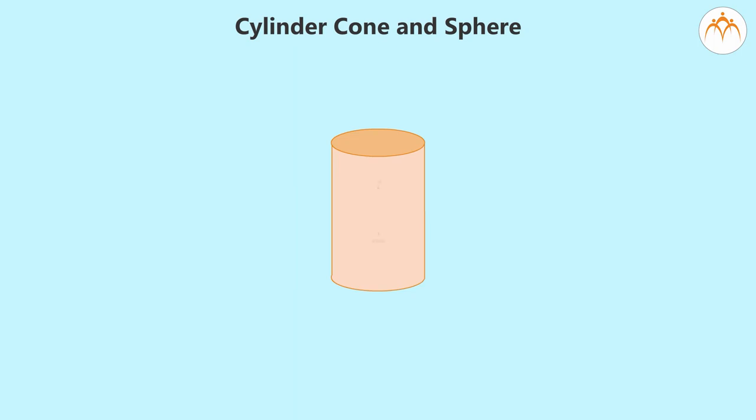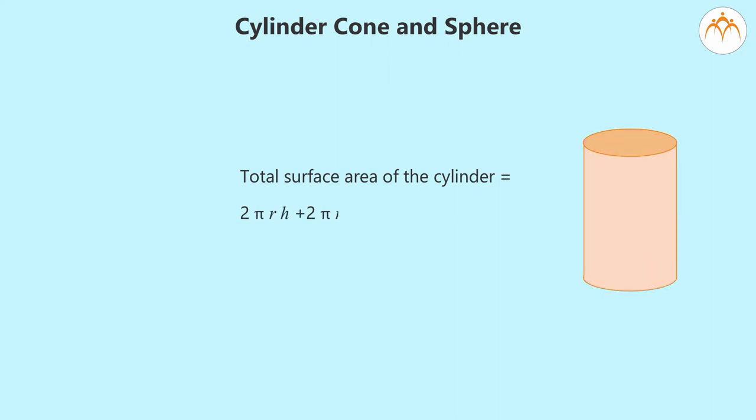The area of the circles on the top and bottom is πr². So the total surface area is the sum. Total surface area of the cylinder equals 2πrh + 2πr² = 2πr(r + h).